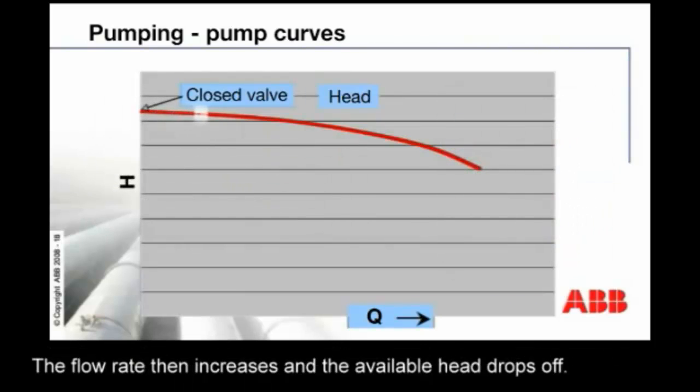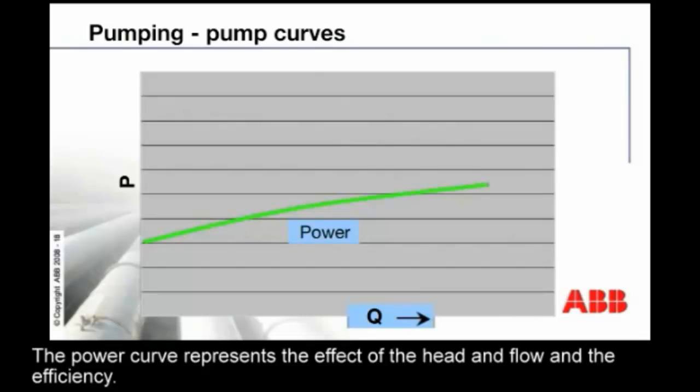The flow rate then increases and the available head drops off. The power curve represents the effect of the head and the flow and the efficiency.